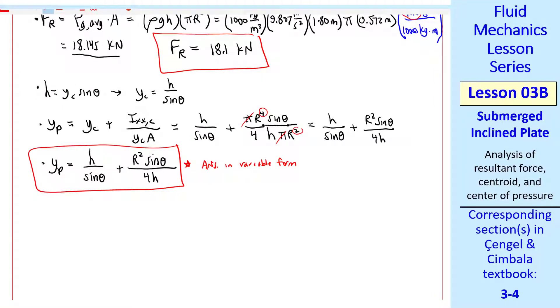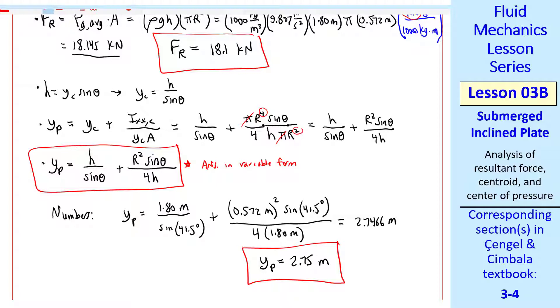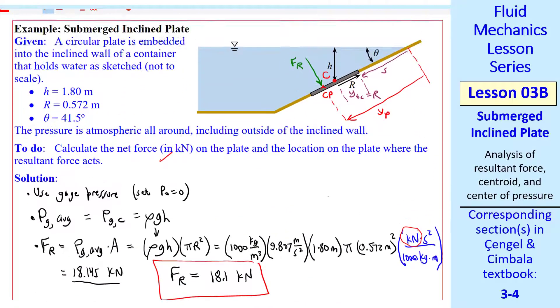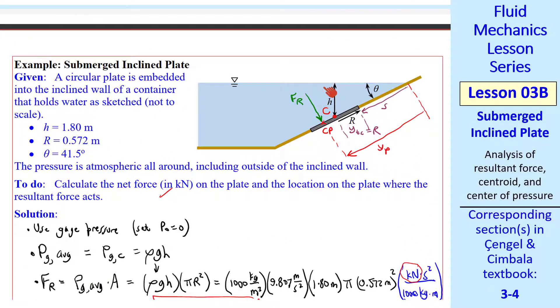Now we just plug in the numbers to get our answer. YP is 1.80 meters over sine 41.5 degrees plus R squared sine theta over four H. My calculator gives 2.746 meters. And my answer to three digits is YP equal 2.75 meters. You'd have to do a little bit of trig here with a sine theta to figure out the height to the center of pressure. This is the distance here to the center of pressure.